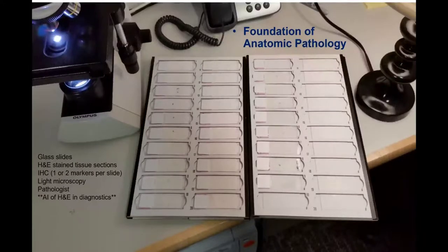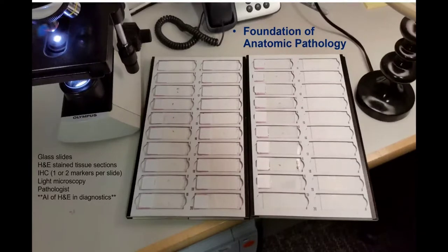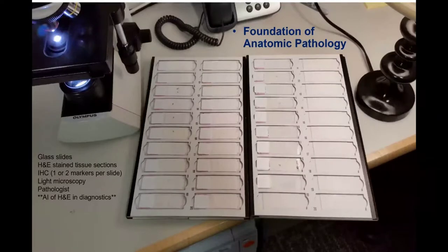This is the foundation of anatomic pathology: glass slides, H&E stained tissue sections, immunohistochemistry of one or two markers per slide, then a light microscope interpreted by a pathologist, read out as a diagnosis. I will not, in this talk, focus on AI and H&E and its role in diagnostics, which is a transformative new field for pathology. Instead, I'll focus on multiplexed tissue imaging.